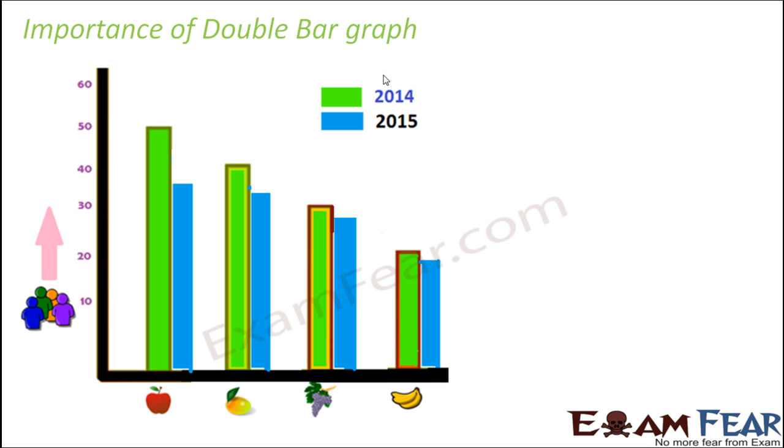Now what is the importance of double bar graph? The first importance is that it helps in comparative analysis. Since we are able to plot the graphs for the two years in the same graph, it helps us to compare how things changed from 2014 to 2015.